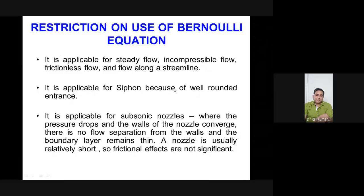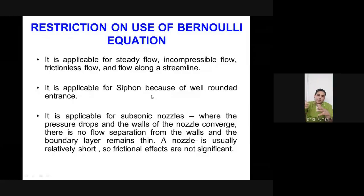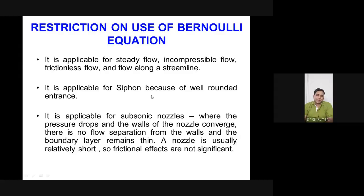Bernoulli is applicable on siphons — a flexible pipe you can bend in any direction, like a long plastic pipe used to water different parts of a farm. It's also applicable on subsonic nozzles and pressure drop calculations where friction effects are negligible. The constraints to keep in mind are: steady, incompressible, frictionless flow along a streamline.